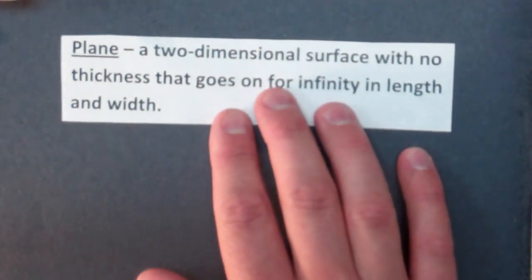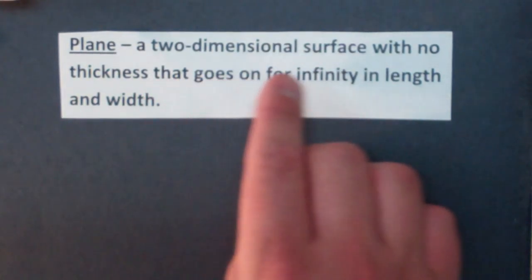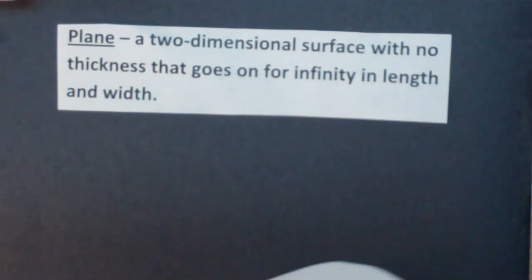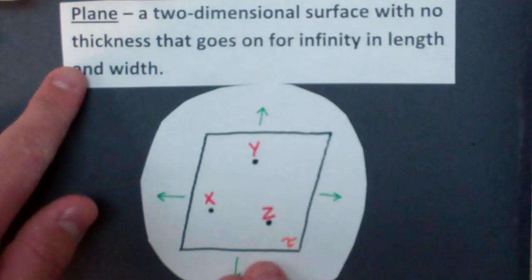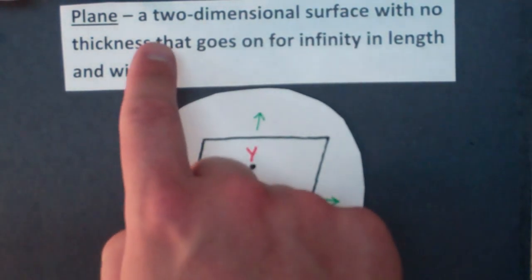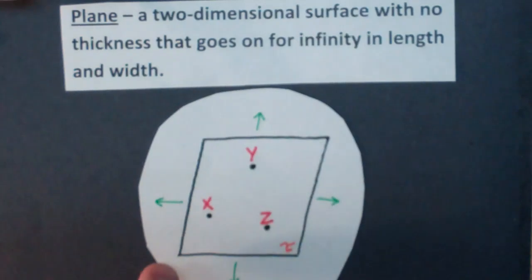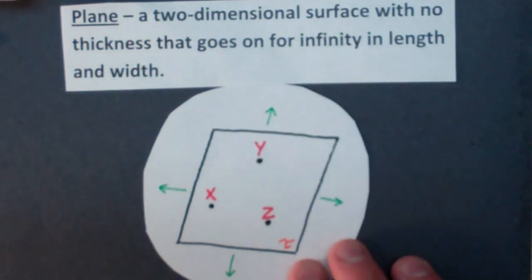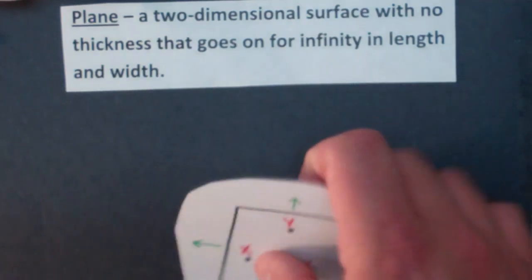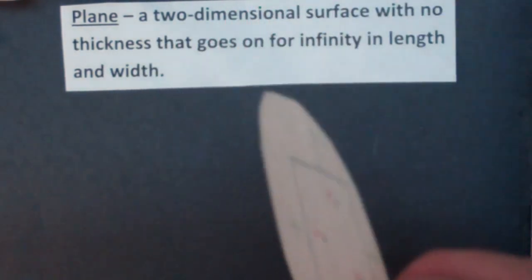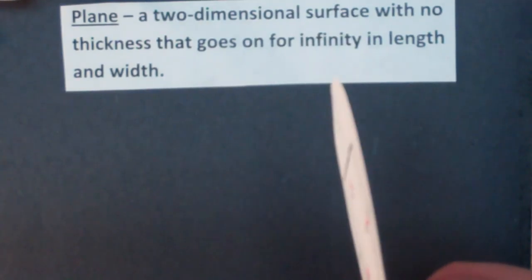The third word we're going to go over is plane. Plane is a two-dimensional surface with no thickness that goes for infinity in length and in width. So I've got a picture associated with this. And what we have here is a two-dimensional surface. So we have a length and a width that's two dimensions with no thickness. So imagine you had a piece of paper that went for infinity in all directions, but it had zero thickness.